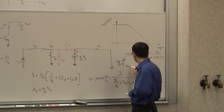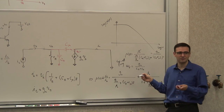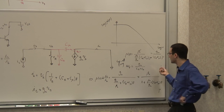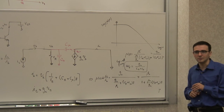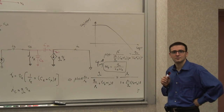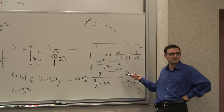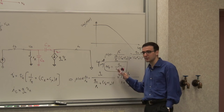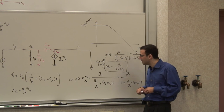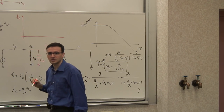By definition, omega_T = gm / (Cpi + Cmu) — the cutoff angular frequency. To get the real frequency, divide by 2π. This tells you: if you want your transistor to work at higher frequencies, you want smaller capacitors (make the transistor smaller) and higher gm (more current). The tradeoff is power consumption versus speed.